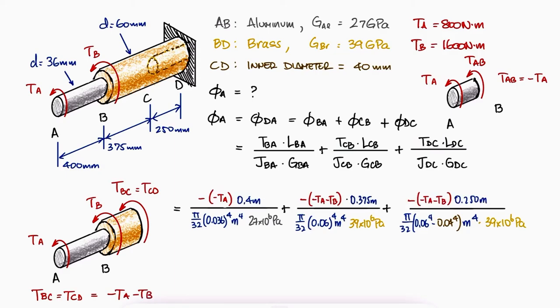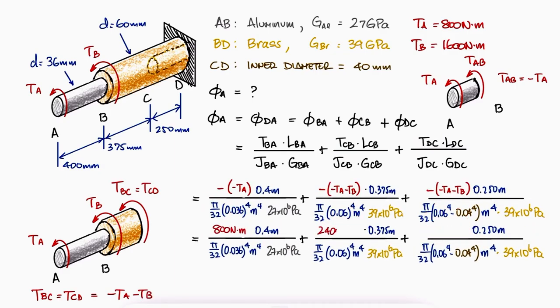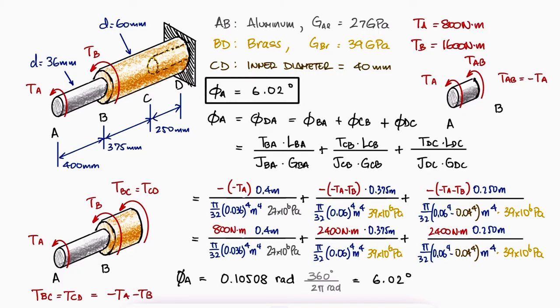Substituting those variables, and then the values for torque A and torque B, we find that the angle of twist at A is 0.105 radians, or 6.02 degrees. The positive value of the angle shows us that that angle has a counterclockwise direction.